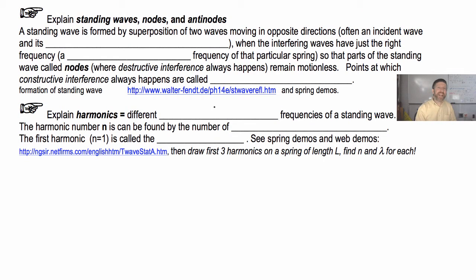Okay, so a standing wave is formed by superposition. What's the other word for superposition? Interference. It's formed by superposition of two waves moving in opposite directions.